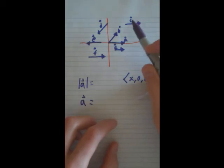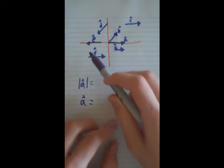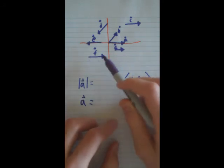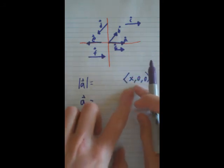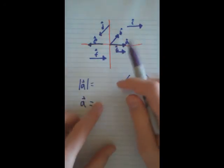But essentially, both C and F also don't move up on the Y or the Z. So, and they're the same distance X as A. So, those are going to equal to it.